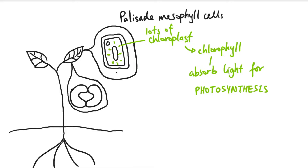In the leaves, apart from having palisade mesophyll cells, on the lower epidermis we also have another structure. We have two guard cells on the side, but the main thing is the hole inside which is the stoma, or stomata. The stomata is what allows carbon dioxide to actually enter the leaf — from the atmosphere it goes through the stomata and through the air spaces in the spongy mesophyll cells to get to the palisade mesophyll cells.